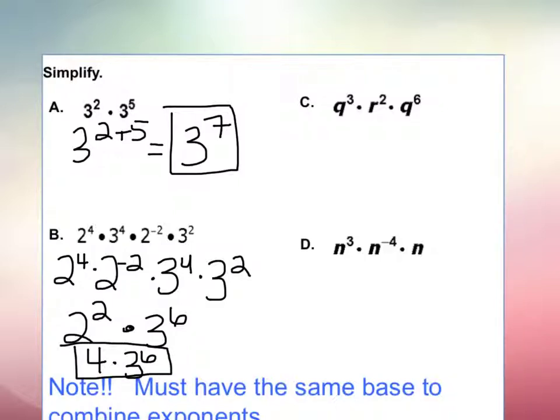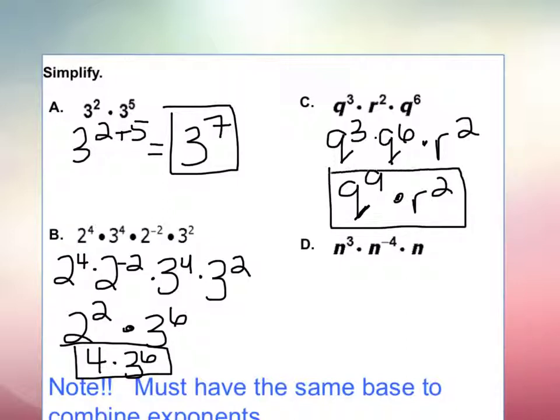Let's look at part C. Remember, they have to be the same base, so I don't combine the R squared, I'll just combine the Q to the 3rd times Q to the 6th, and then R squared is off by itself. Q to the 3rd, so it's 3 plus 6, 3 plus 6 is 9, so it's going to be Q to the 9 power. Make sure we know those are Q's. Q to the 9 power, and then I just keep R squared by itself. So there's no other base to combine it with.